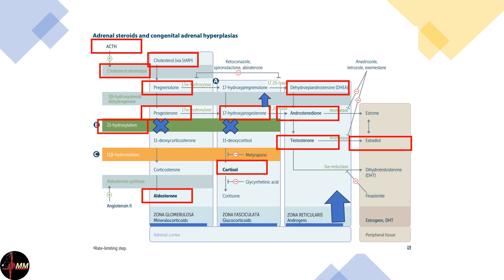Patients with 21-hydroxylase deficiency often present with ambiguous genitalia in females, early virilization in males, and potential salt-wasting crises due to aldosterone deficiency. Treatment involves glucocorticoid and mineralocorticoid replacement to reduce ACTH stimulation and correct hormonal imbalances. Monitoring and adjusting therapy is crucial for managing symptoms and preventing complications.